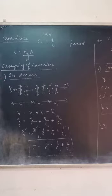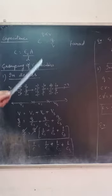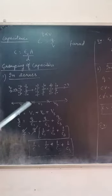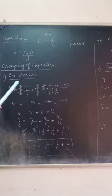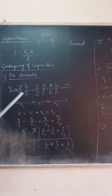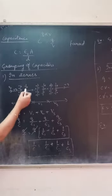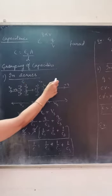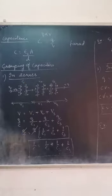Now we come to the topic: the grouping of capacitors. How can we group capacitors? Basically, there are two methods. The first is series. We have three capacitors — C1, C2, and C3 — each with two plates.